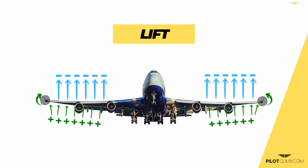Since the vortices were less, the induced drag was lower, and thus the total drag of the aircraft was reduced — less power required, more fuel efficiency. That's why winglets were introduced: they proved to be very fuel efficient.